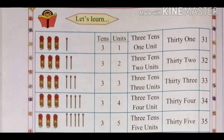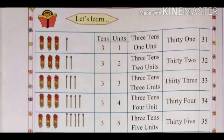Three bunches of math sticks means 30 math sticks. With 4 math sticks: 34. That is 3 tens and 4 units — 34. The spelling of 34 is T-H-I-R-T-Y (30) F-O-U-R (4): 34.